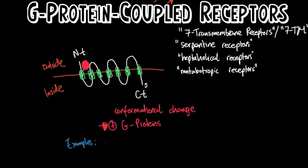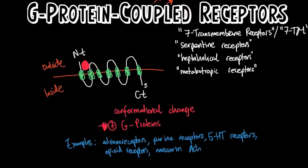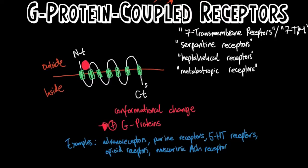Examples of GPCRs include adrenoreceptors, purine receptors, serotonin receptors (excluding 5-HT3, which is an ionotropic receptor), opioid receptors, and also the muscarinic acetylcholine receptor.